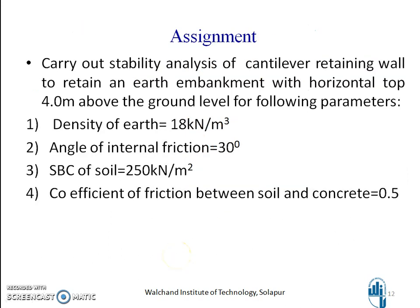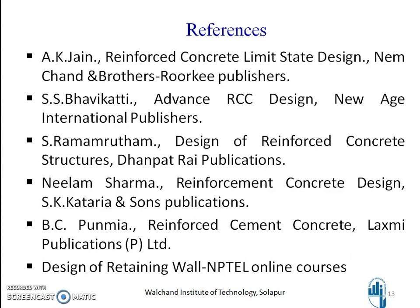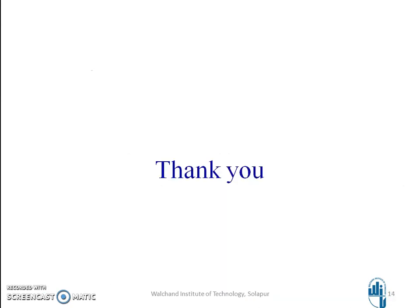Assignment: Carry out stability analysis of a cantilever retaining wall to retain an earth embankment with horizontal top 4 meters above the ground level for the following parameters — density of soil 18 kN/m³, angle of internal friction 30 degrees, SBC 250 kN/m², and coefficient of friction between soil and concrete 0.5. These are all the references used for preparing this lecture. Thank you and enjoy.